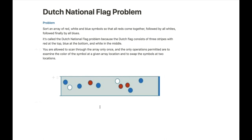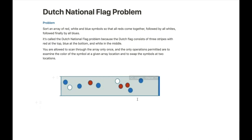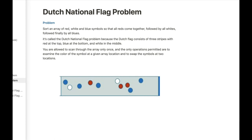In this example, we have blue circles, white circles, and red circles. The goal is to put the red circles first, then the white circles together, then the blue circles after that. So now let's see how we can solve this problem.